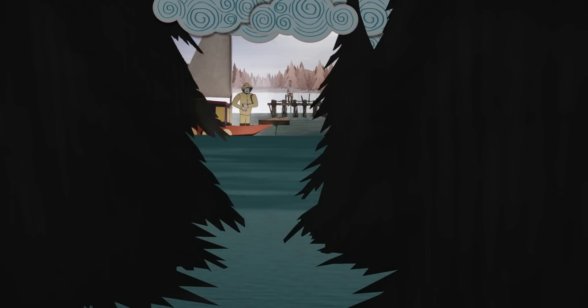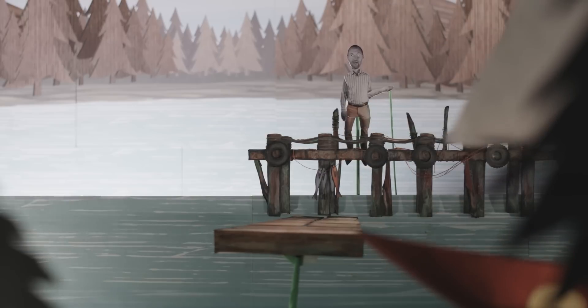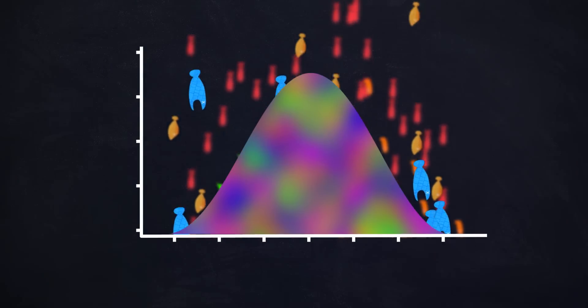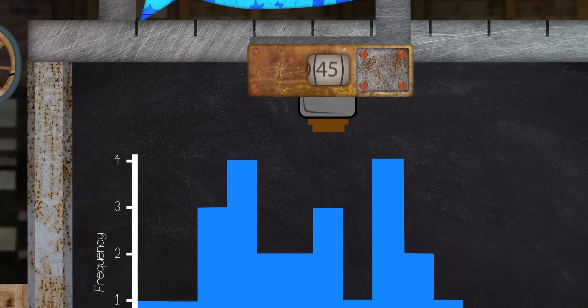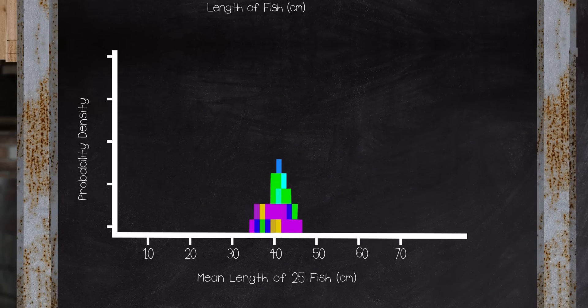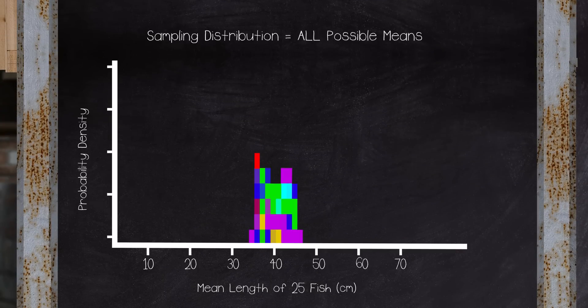Suppose you wanted to take a sample to estimate the mean length of fish in a lake. And suppose somehow you could know the true population mean length of fish in this lake. While our sample mean should be reasonably close to that true mean of 40 centimeters, we know that due to sampling variability, it won't be exactly equal to 40. Our estimate is just one of many possible sample means we could have ended up with on any particular day.